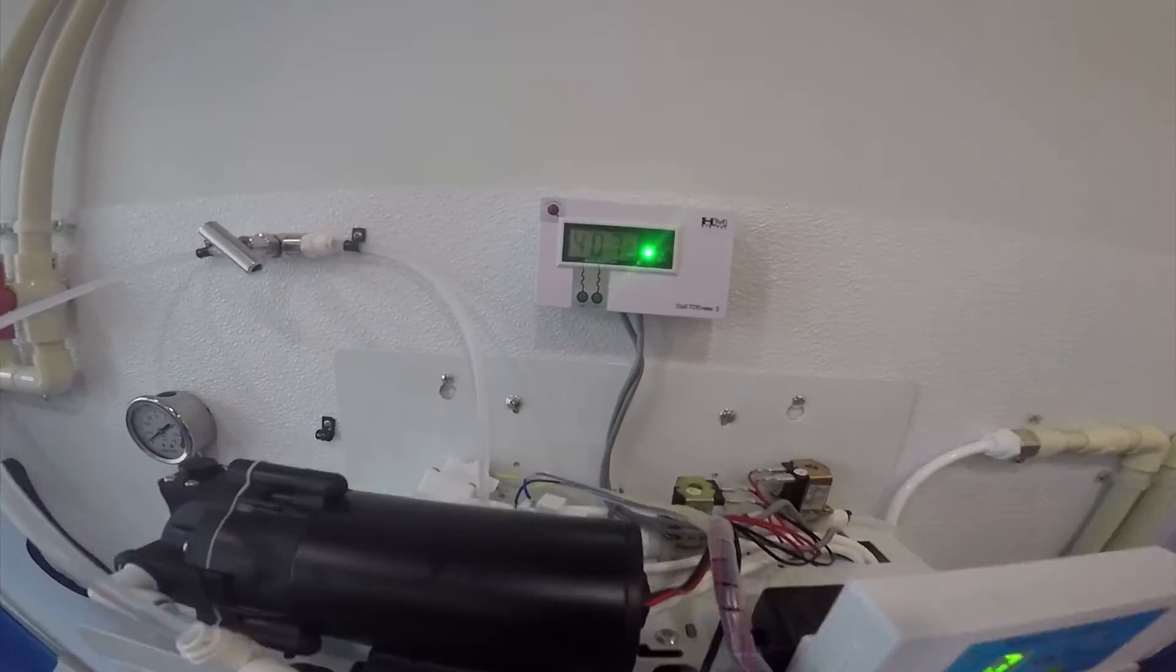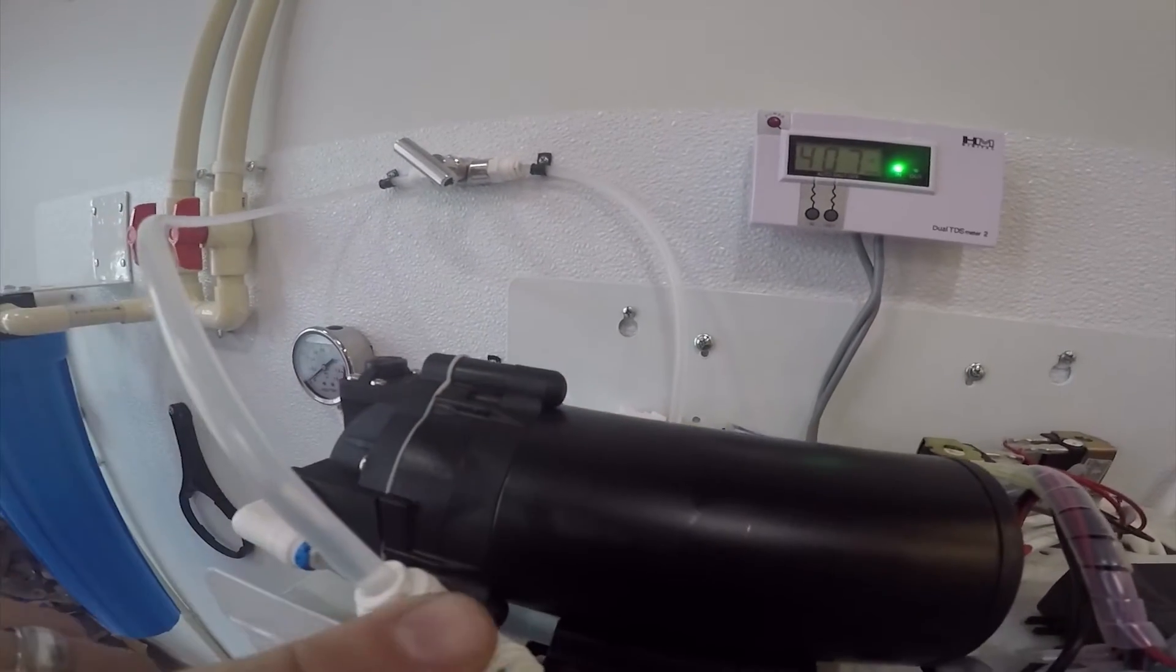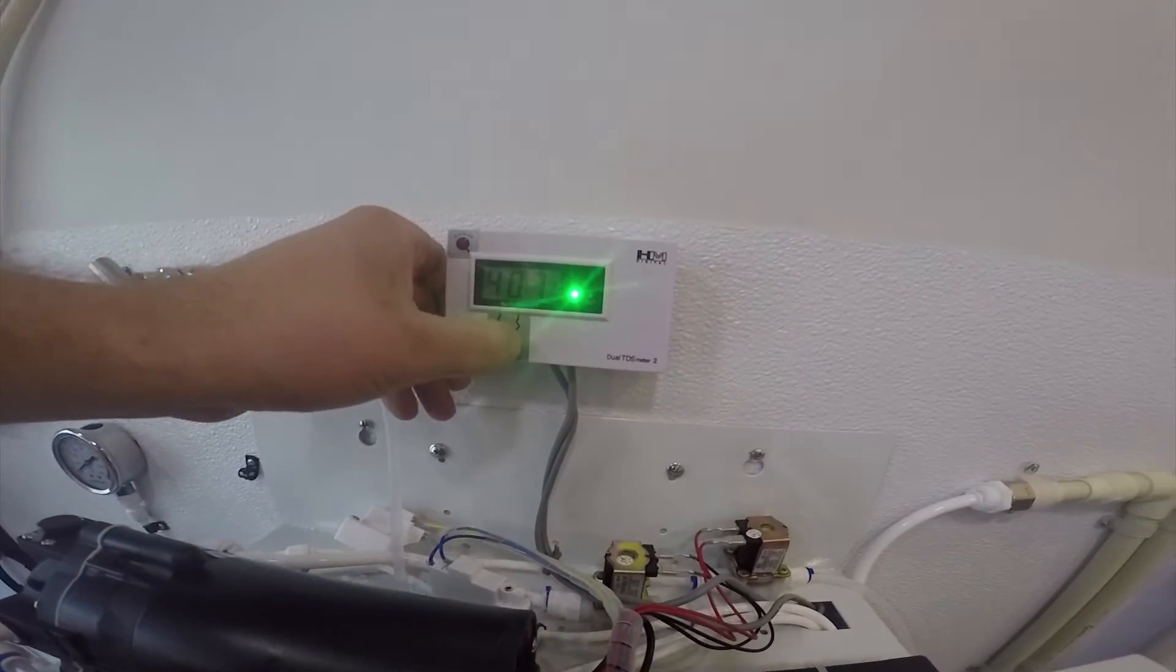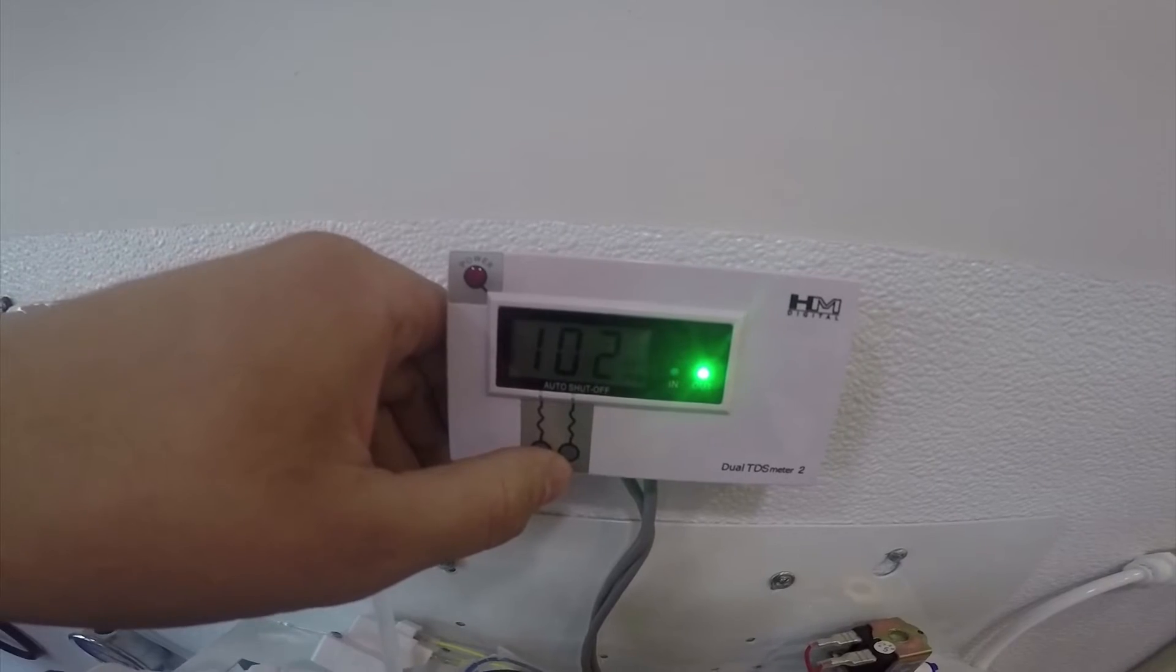And then the RO system. A neat thing we put in is this bypass valve here. This goes in after the pump, so the pump has to be engaged. Then we're able to blend back in some non-RO water, and you see we're a little over 100 TDS.